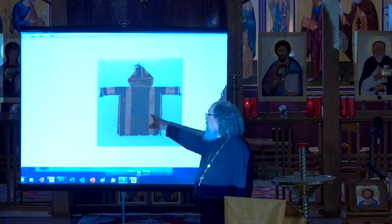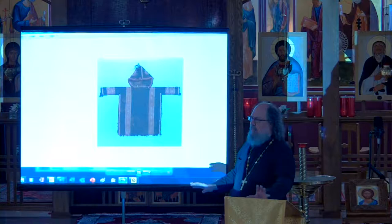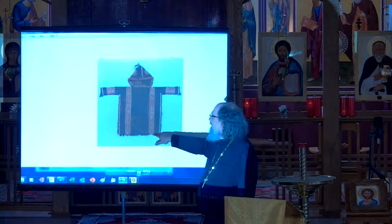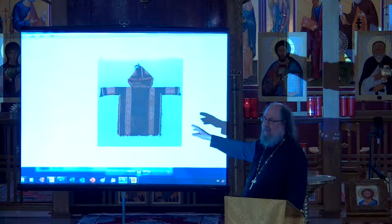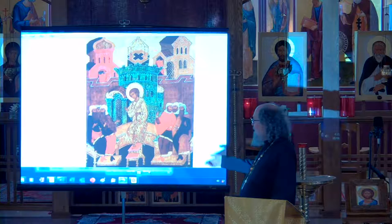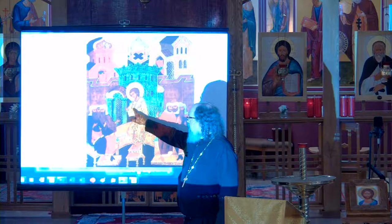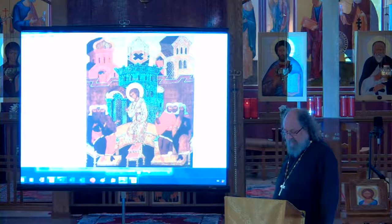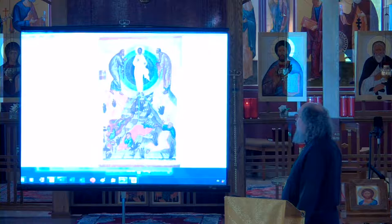This is one of the earliest representations in a panel icon — from about the 8th century. The clavii were normal things and you can find garments with clavii in various museums. You can see the two garments always being present: the inner garment and the outer garment, with the clavus. This is an icon from Pskov in the 17th century.